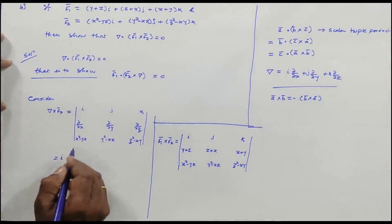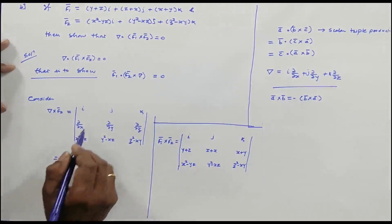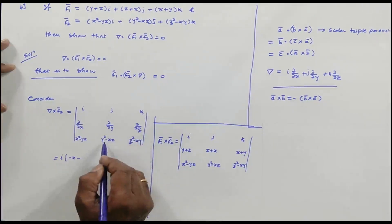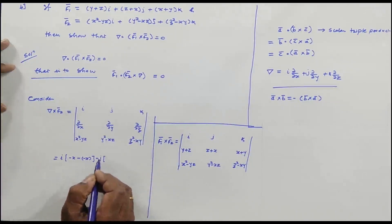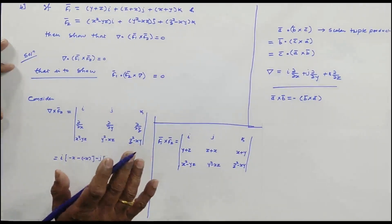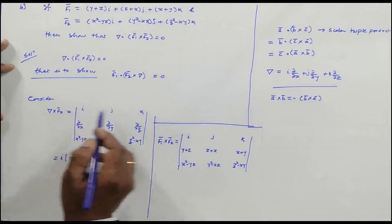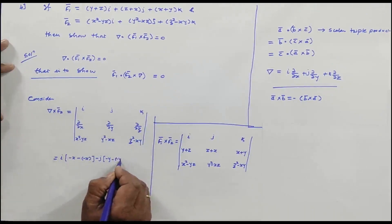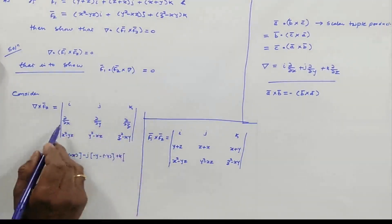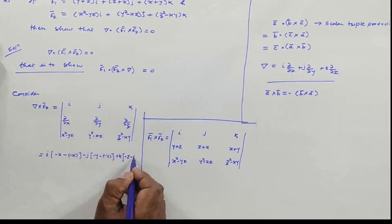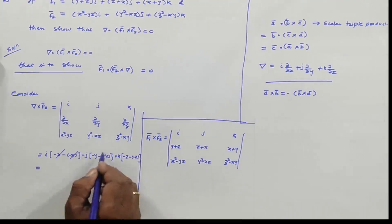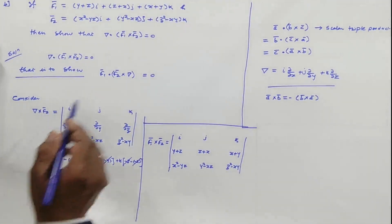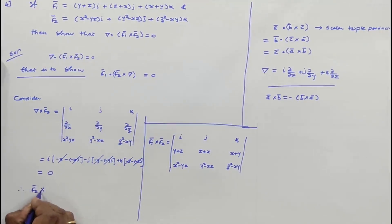Computing the curl: i(-x - (-x)) + j(-y - (-y)) + k(-z - (-z)) = 0i + 0j + 0k. So del × F̄₂ = 0. Therefore F̄₂ × del = 0 as well. This means del · (F̄₁ × F̄₂) = F̄₁ · (del × F̄₂) = F̄₁ · 0 = 0, which proves the result.